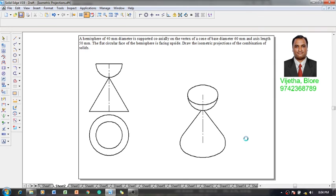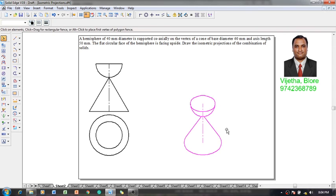We have to select this figure, then using the scale command, let us convert this into an isometric scale factor of 0.8164 times the original figure. This is the required isometric projection for the given conditions.